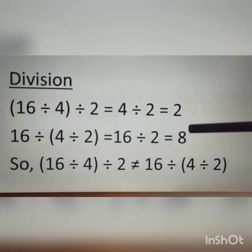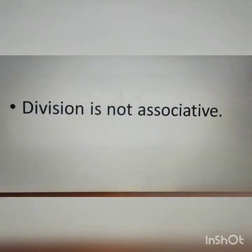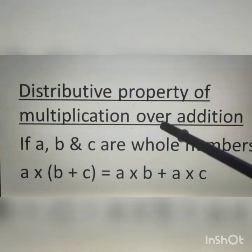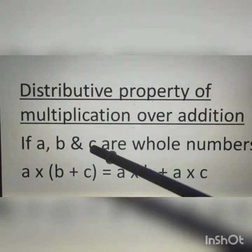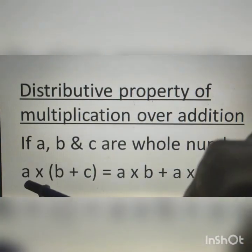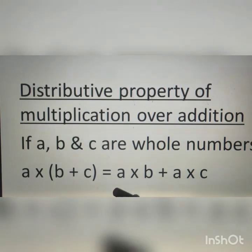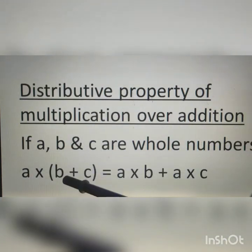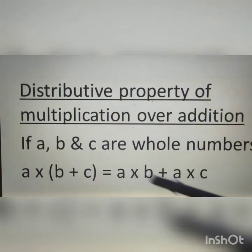These two values are not equal, so we can say division is not associative. The next property is distributivity of multiplication over addition. If a, b, and c are whole numbers, then a × (b + c) = a × b + a × c. Here a is distributed among b and c.